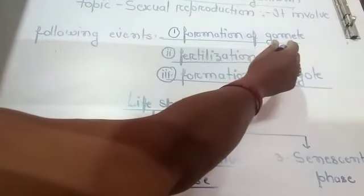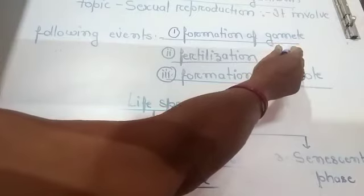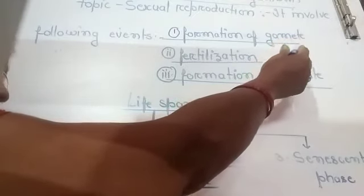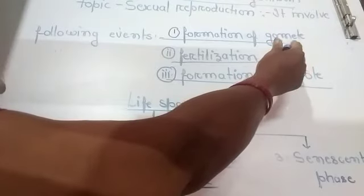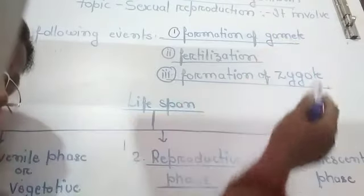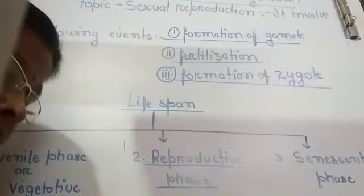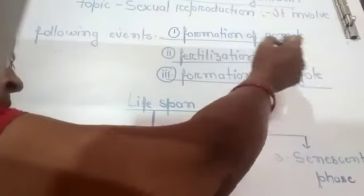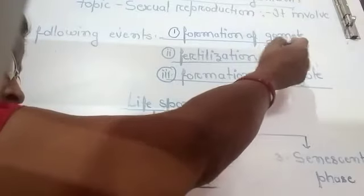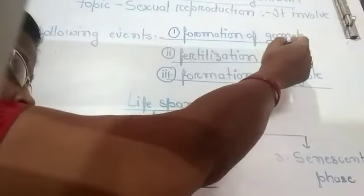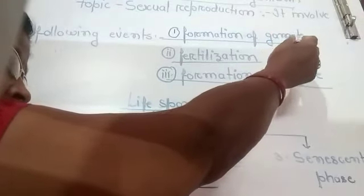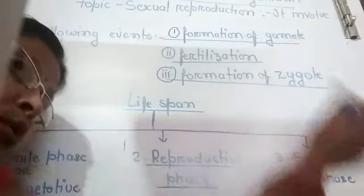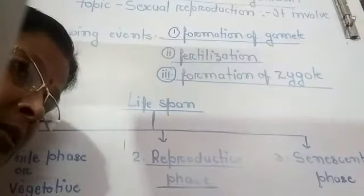As you know, the gamete is always haploid, produced by the sex organs. It may be male gamete or female gamete. Male sex organs produce male gametes known as antherozoids in plants and sperm in humans. Female gametes which are produced in female sex organs are called ovum or egg in both plants and animals.